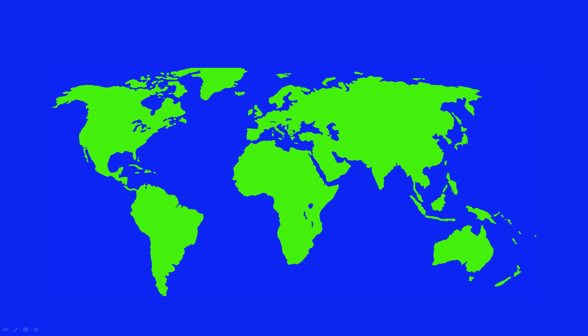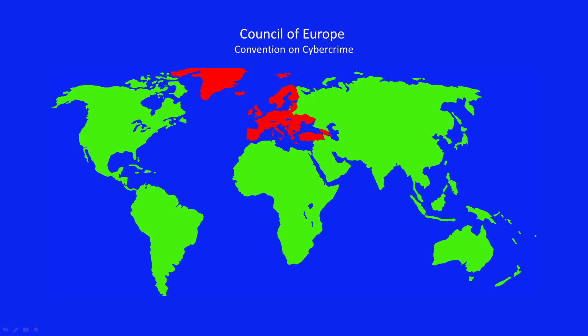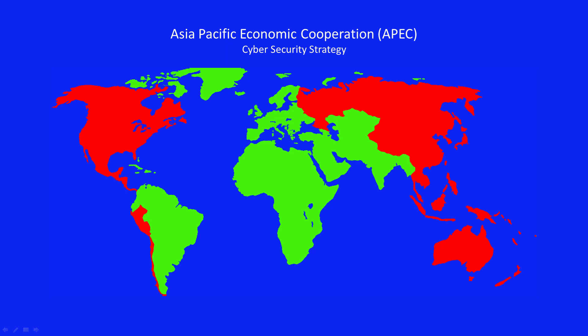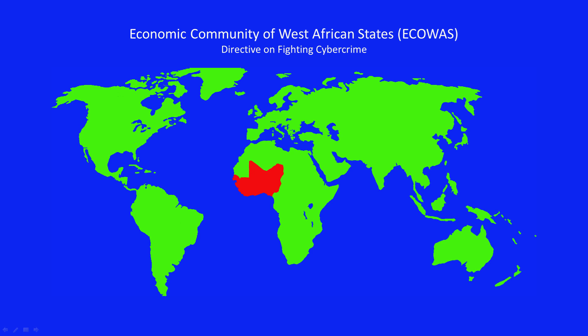For example, the Council of Europe's Convention on Cybercrime, also known as the Budapest Convention. The Asia-Pacific Economic Cooperation, APEC, have developed a cyber security strategy, and the Economic Community of West African States has a directive on fighting cybercrime.